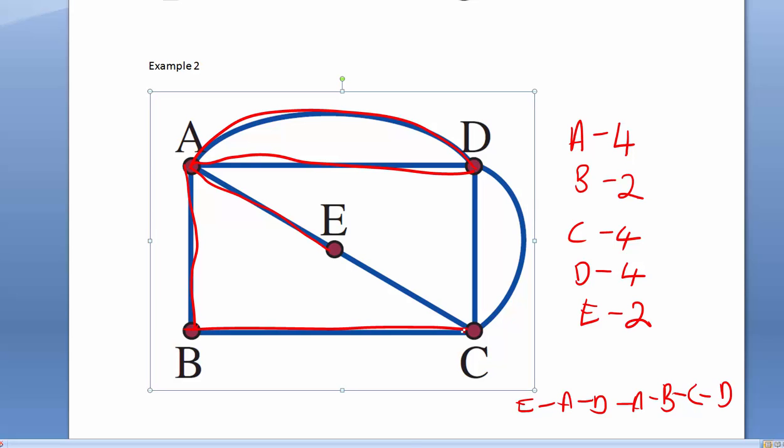C to D, and I'll use this particular edge. From D, I'll go down to C, and C back to E. So, that's my Eulerian circuit.